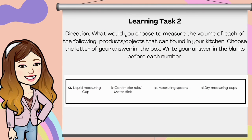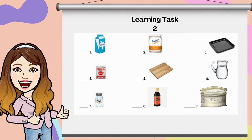Next, learning task 2. Direction: what would you choose to measure the volume of each of the following products or objects found in your kitchen? Choose the letter of your answer in the box and write your answer in the blanks before each number. Letter A: liquid measuring cup. B: centimeter rule or meter stick. C: measuring spoons. D: dry measuring cups. Number 1, milk. Number 2, flour. Number 3, pan. Number 4, basin. Number 5, chopping board.